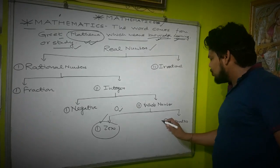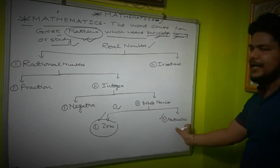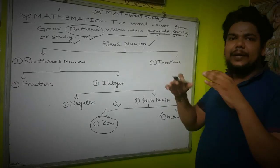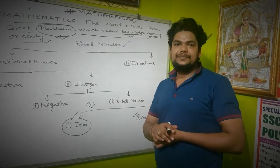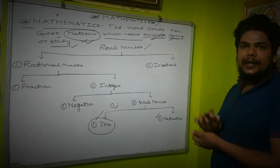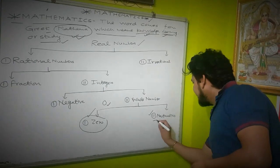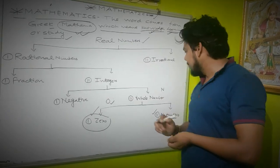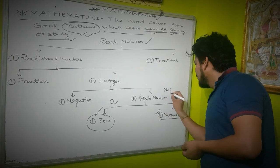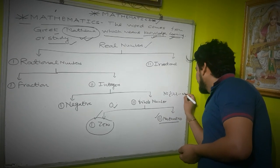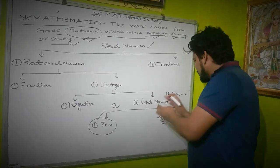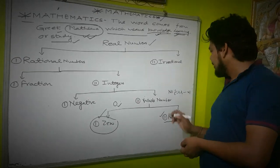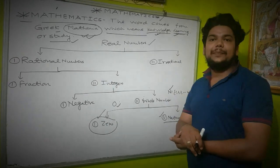The next topic is natural numbers. What is a natural number? All the counting numbers are called natural numbers. Natural numbers are represented by the capital letter N. N equals 1, 2, 3, up to n. All the counting numbers are called natural numbers.